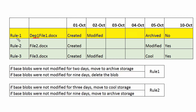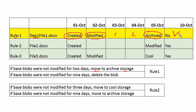For file 1, rule 1 is applied. File 1 was created on October 1st and modified on October 2nd. After two days of no modification, the file is moved to archive storage — so on October 5th it was moved to archive. Since it is now in archive, it is not accessible. Therefore 'No' is the correct answer for file 1.